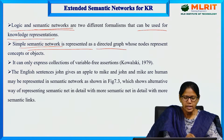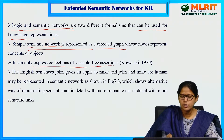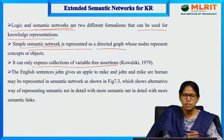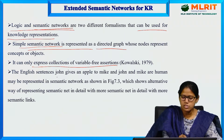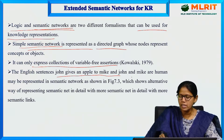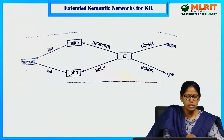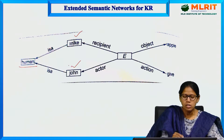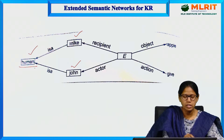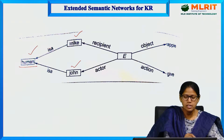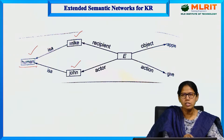A simple semantic network can only express a collection of variable-free assertions. If you take the English sentence 'John gives an apple to Mike and John and Mike are human,' let us see how it will be represented. Here, human is the base super node, Mike is a human, and John is a human.